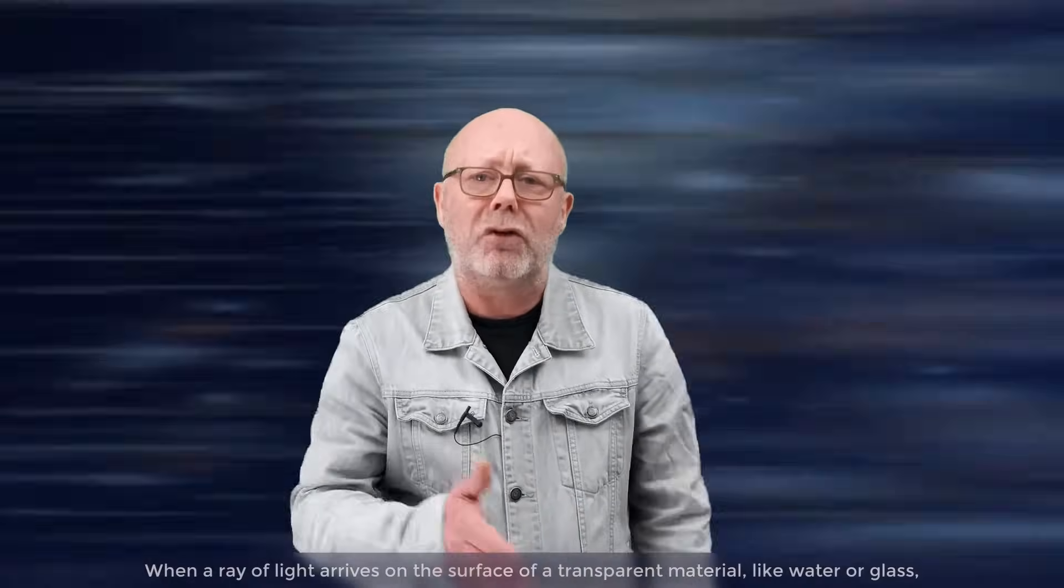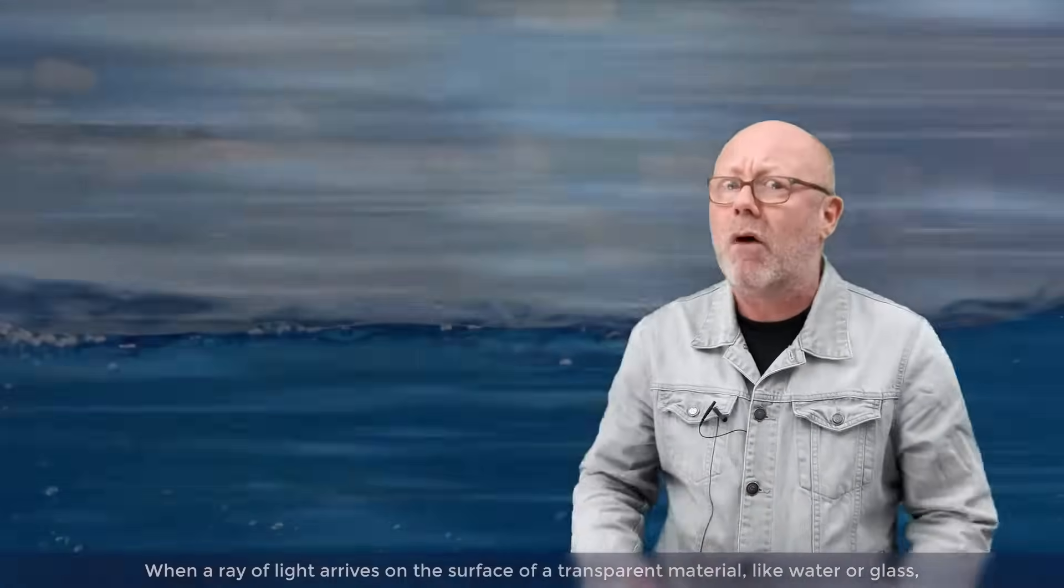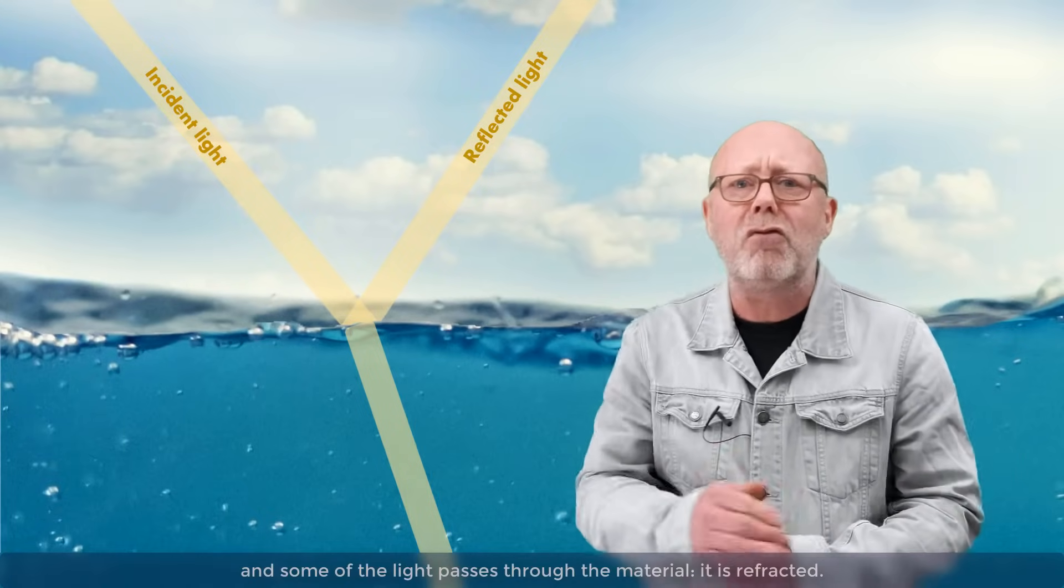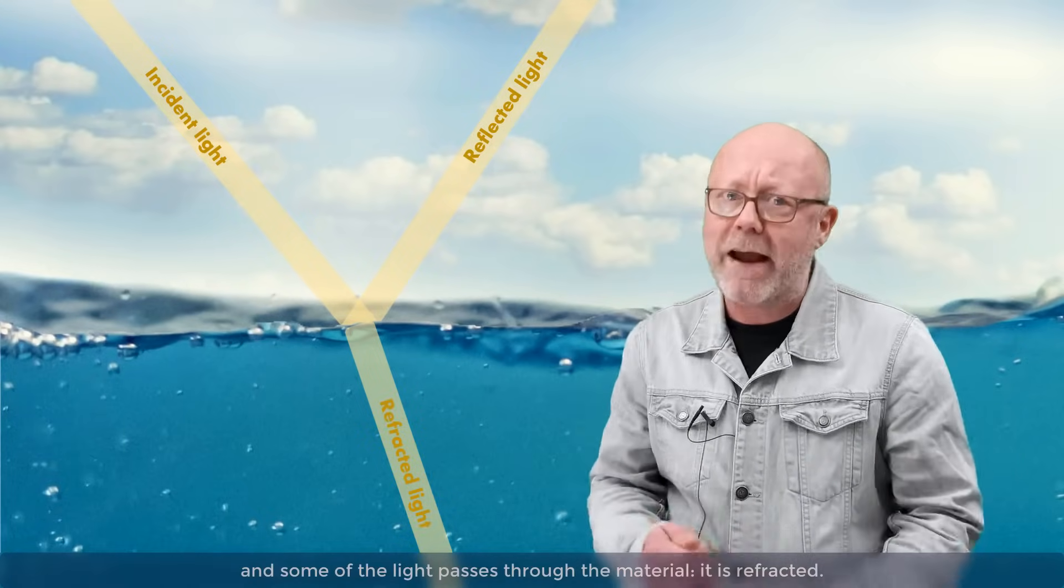When a ray of light arrives on the surface of a transparent material, like water or glass, the beam of light splits in two. Some of the light is reflected, and some of the light passes through the material. It is refracted.